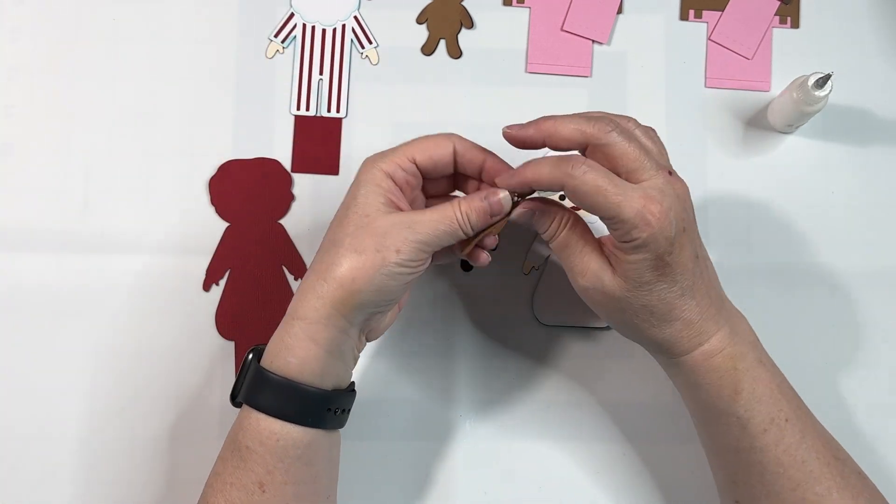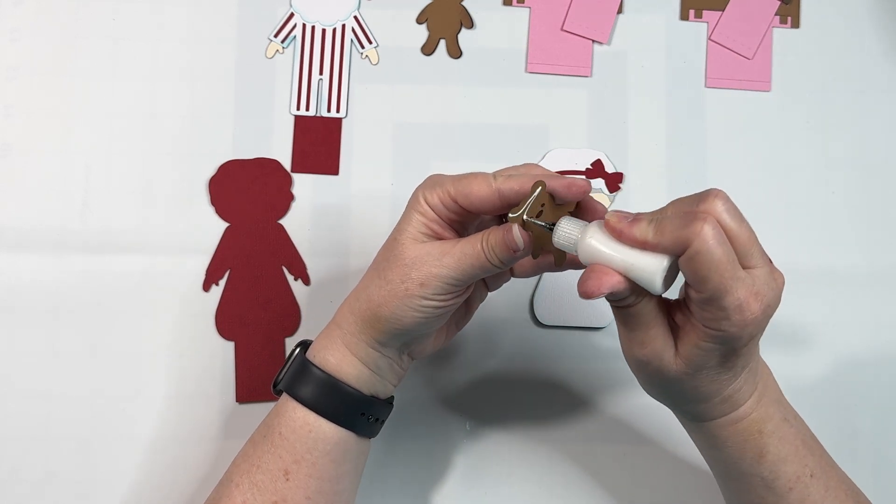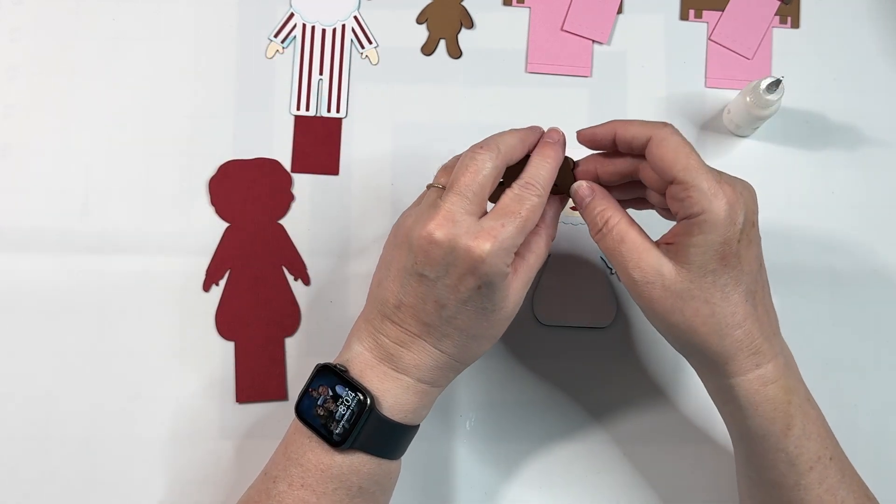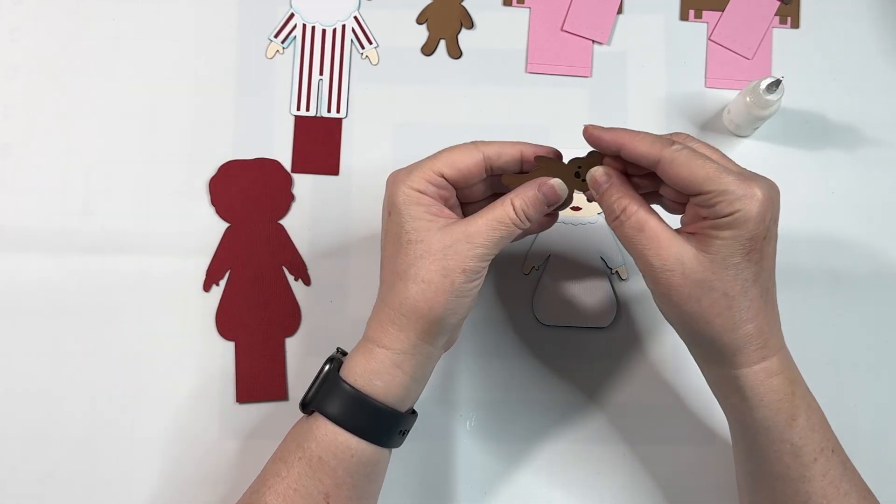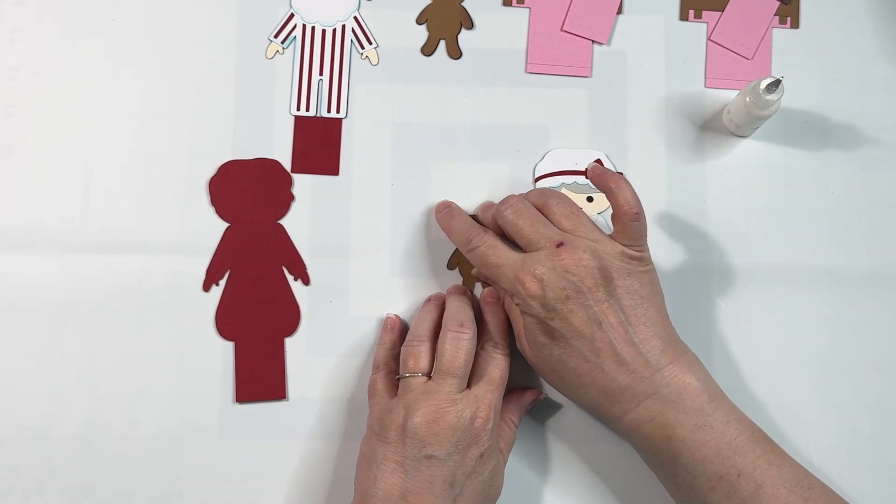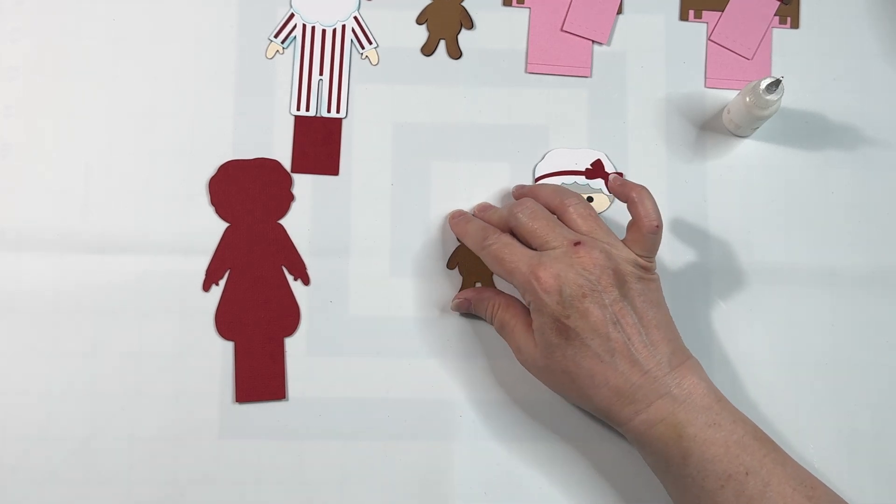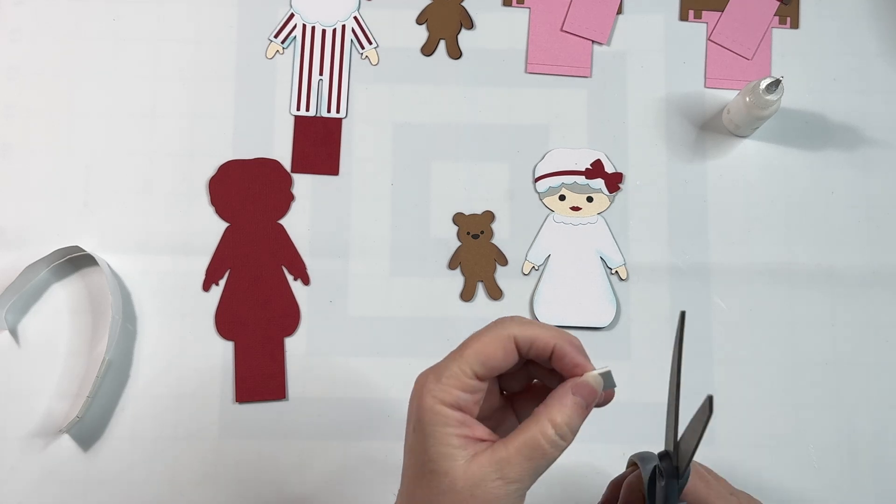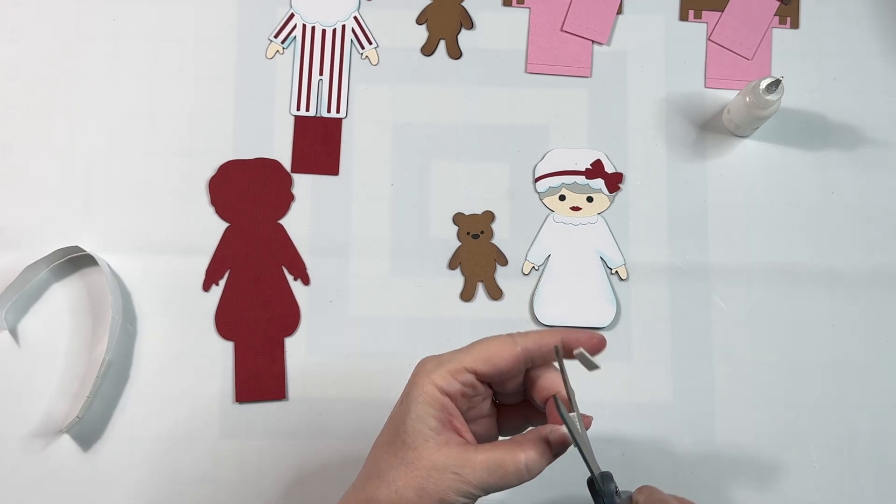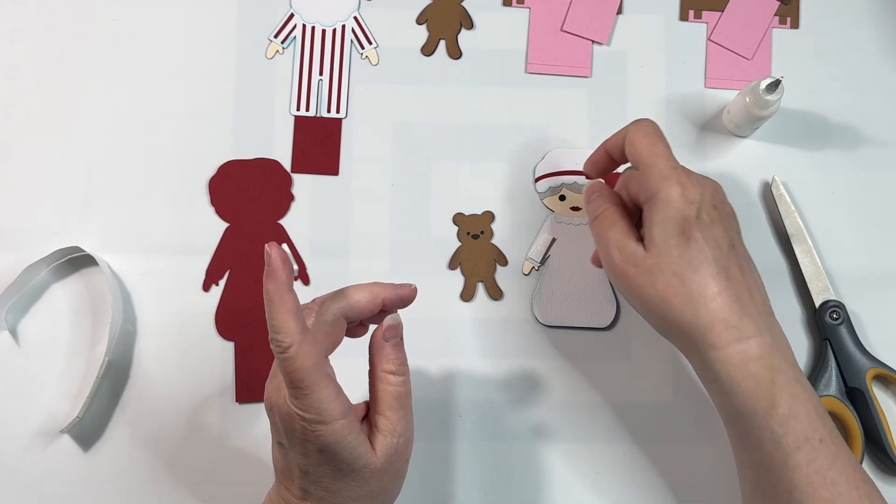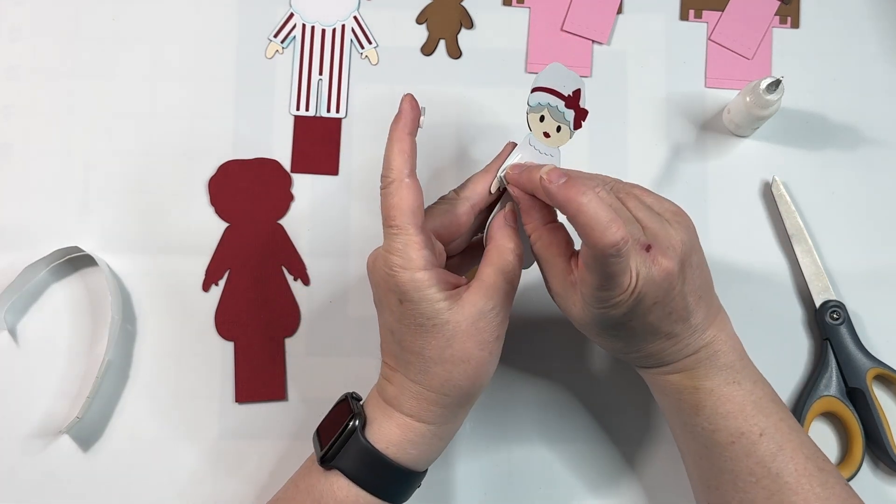And then the teddy bear. And I am gonna pop the teddy bears up with some foam tape if I can find it. I'm going to cut it. The most important thing is to not have any of the sticky hanging over an edge because you don't want it to stick your card closed where it shouldn't be.